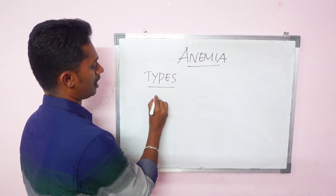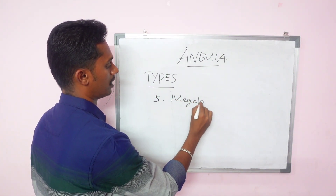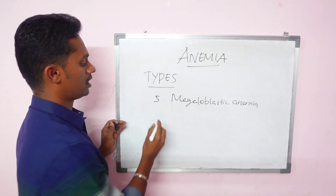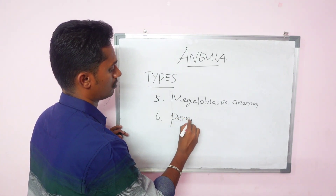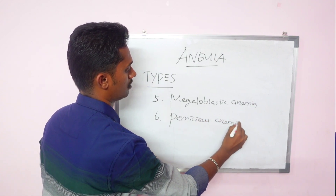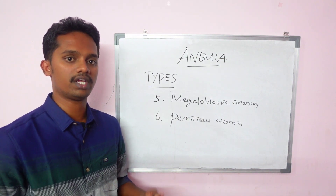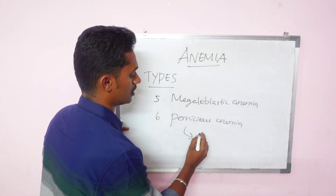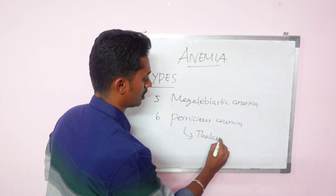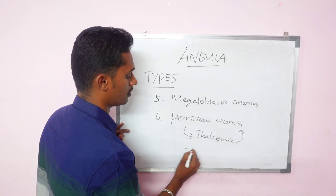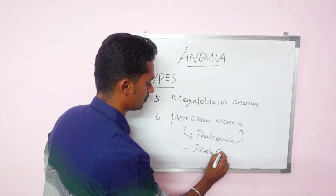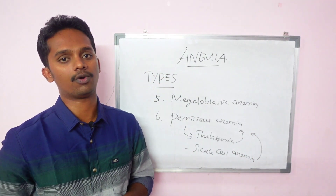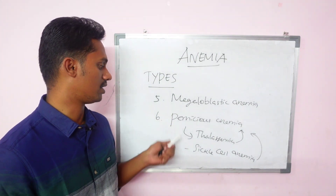The next type is Megaloblastic Anemia, then Pernicious Anemia. So based on etiology, this is the classification with 6 types. Additional types include Thalassemia and Sickle Cell Anemia. So altogether there are these types of anemia based on etiology.